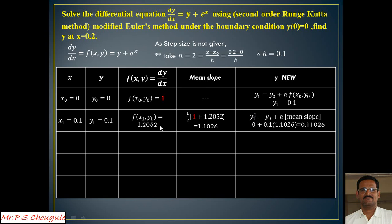Using the mean slope of 1.1026 — not 1.2052 — in the corrector formula: y0=0, h=0.1, mean slope=1.1026. So 0 + 0.1 × 1.1026 gives us a better approximate value of y1 equal to 0.11026. We now need to do a second iteration for a better value of y1.